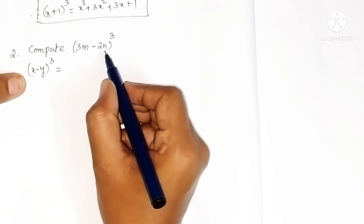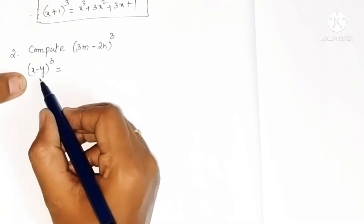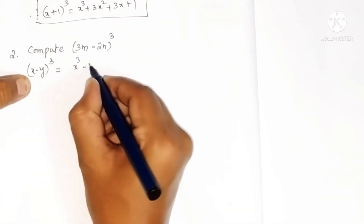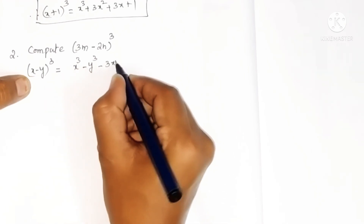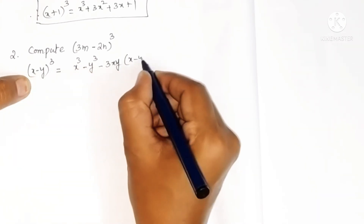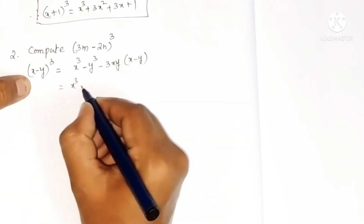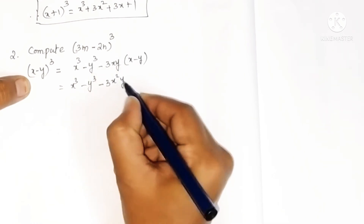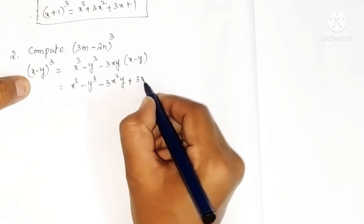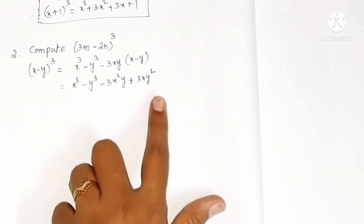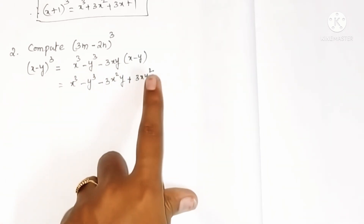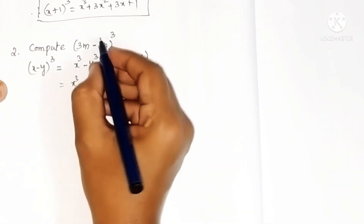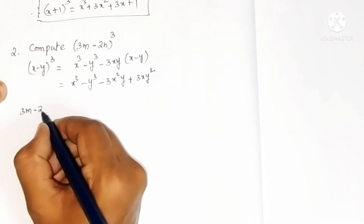Second problem: compute 3m minus 2n whole cube. By seeing this you can identify this is in the form of x minus y whole cube. The formula for x minus y whole cube is x cube minus y cube minus 3 x squared y plus 3 x y squared. Remember: the last term is plus y squared.